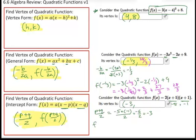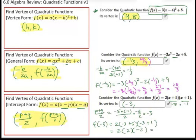We evaluate this function for f of negative 3. The X's represent placeholders, so I fill each space with negative 3. That gives me 2 times positive 2 times negative 2. When I multiply those out, I get my Y coordinate to be negative 8. So the vertex coordinates would be negative 3, negative 8.